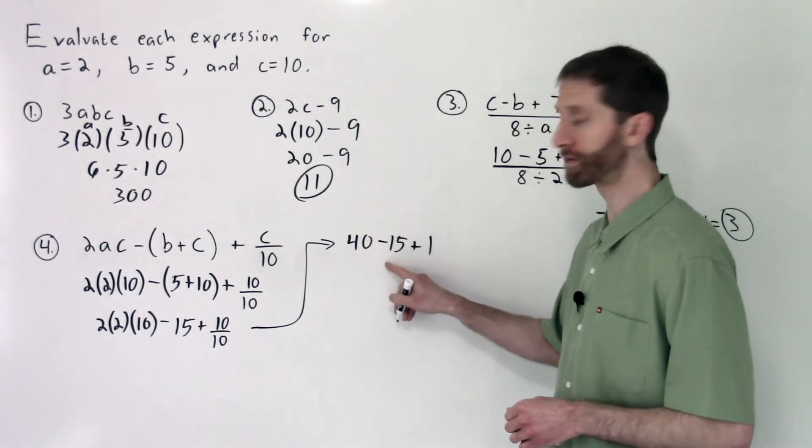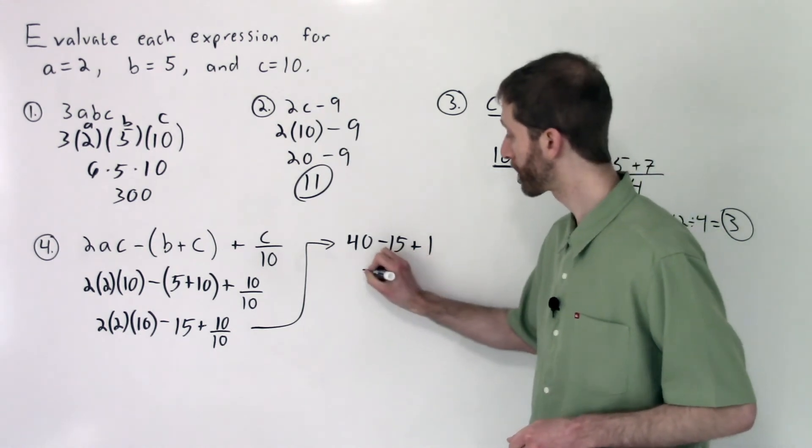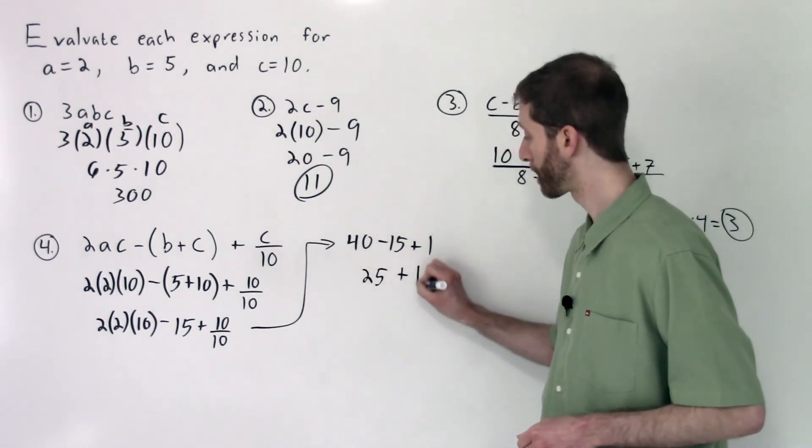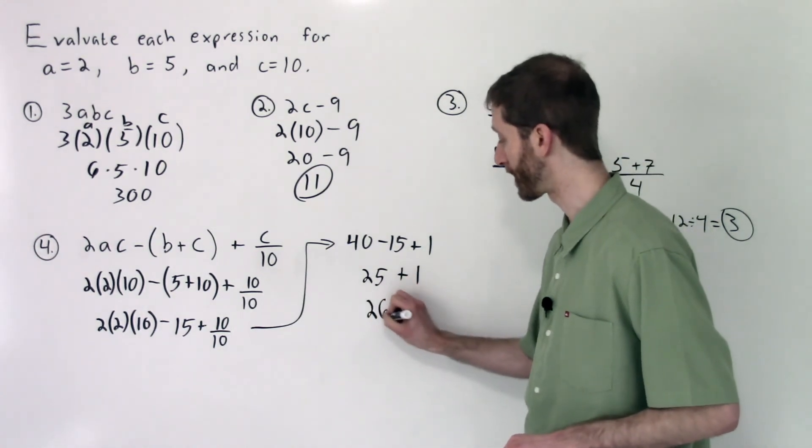Now we'll do subtraction first. 40 minus 15 is 25 plus 1, and that leaves us with 26, which is our final answer.